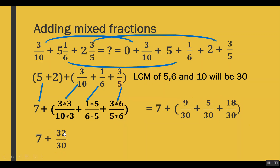We notice that 32 and 30 have a common factor of 2, so we simplify the fraction by dividing both by 2, giving us 16 out of 15. But notice that 16 out of 15 is an improper fraction — in a mixed fraction, we need only a whole number and a proper fraction. So we convert the improper fraction into a mixed fraction: 16 out of 15 becomes 1 plus 1 out of 15.